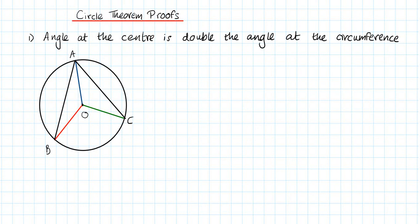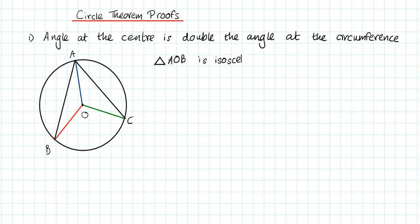I've got a circle here with center O. OB is a radius, OA is a radius, and OC is a radius — so all three are radii. We're going to start by stating that triangle AOB is isosceles, and the reason for this is that OA is equal to OB, as both of them are radii.